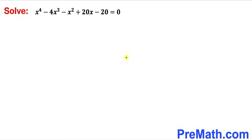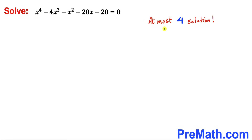Let's get started. First, let's make an observation: we can see our highest degree is 4, so therefore we are going to have at most 4 solutions to this given polynomial.